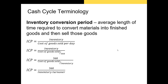Let's talk about each of these three periods. The inventory conversion period is the average length of time it takes to convert materials into finished goods and then sell those goods. The ICP formula is: inventory divided by cost of goods sold per day, which can be rearranged as inventory divided by (cost of goods sold / 360), or equivalently 360 divided by inventory turnover — which is the same formula we saw earlier.